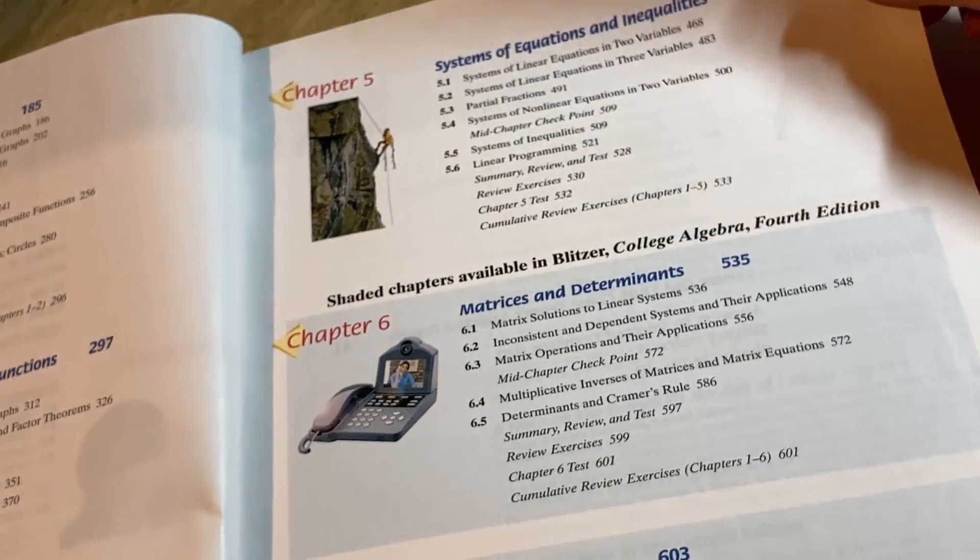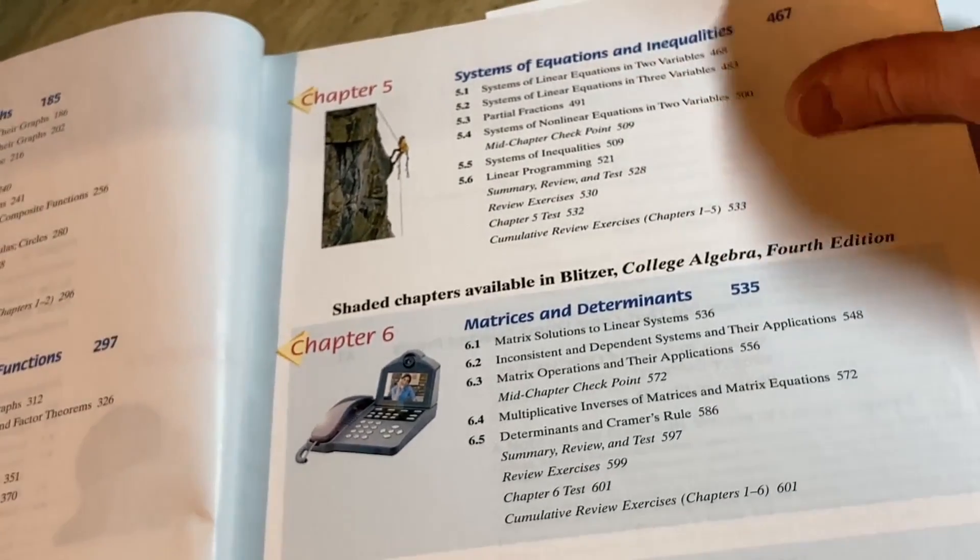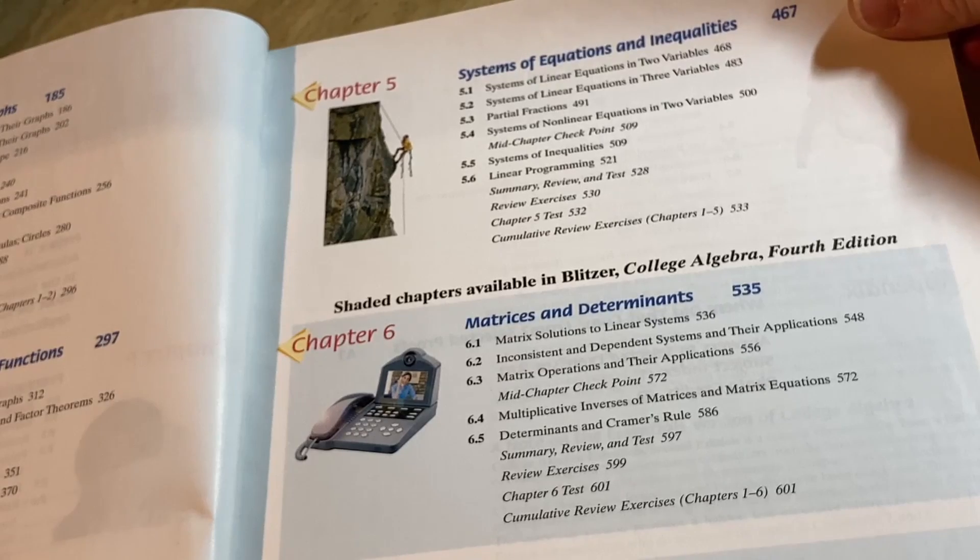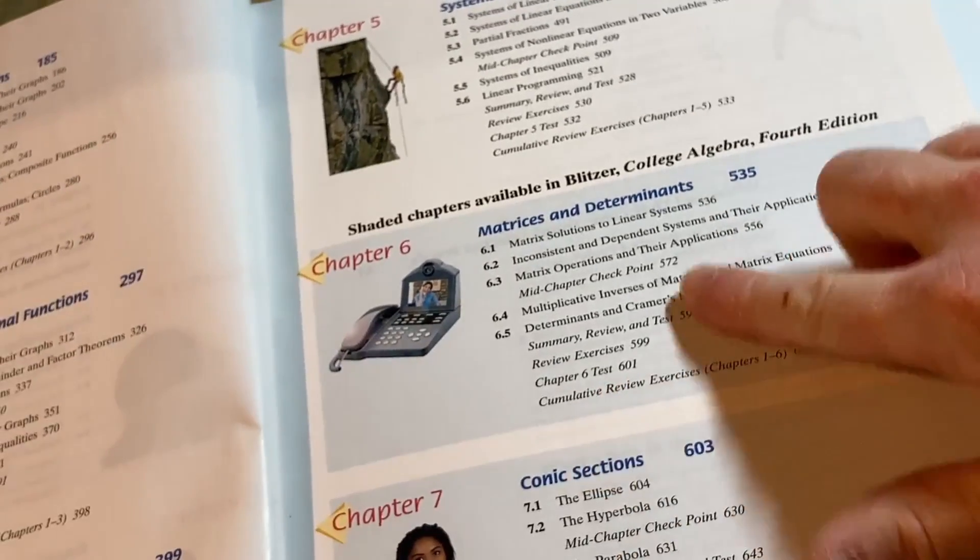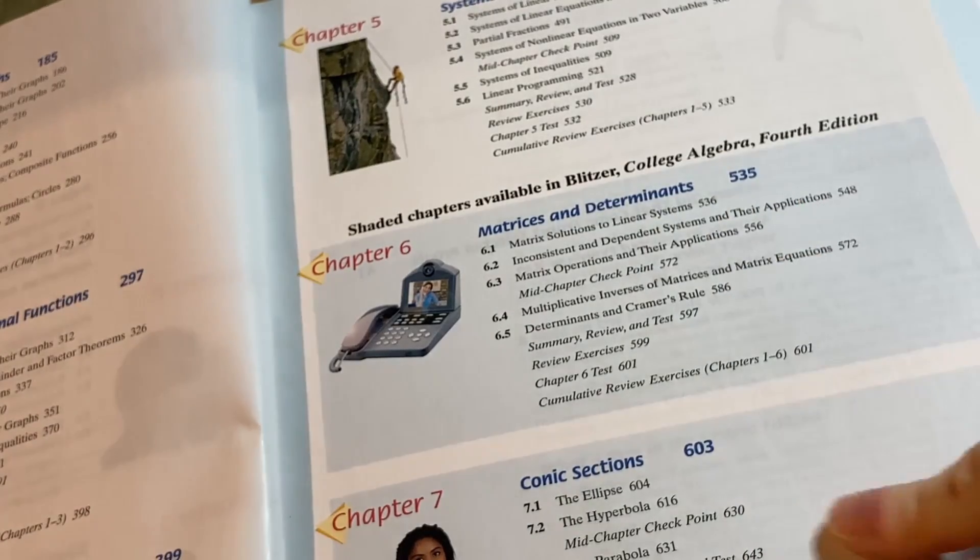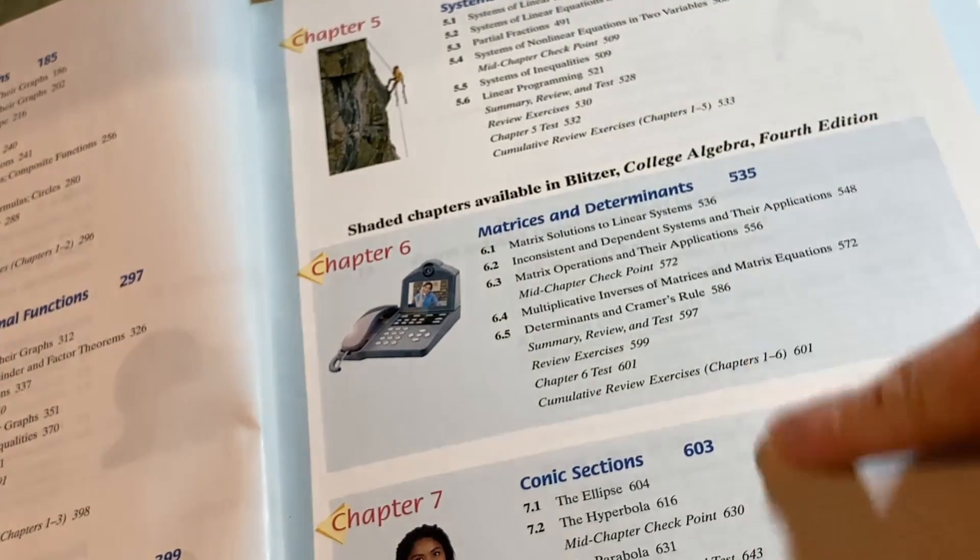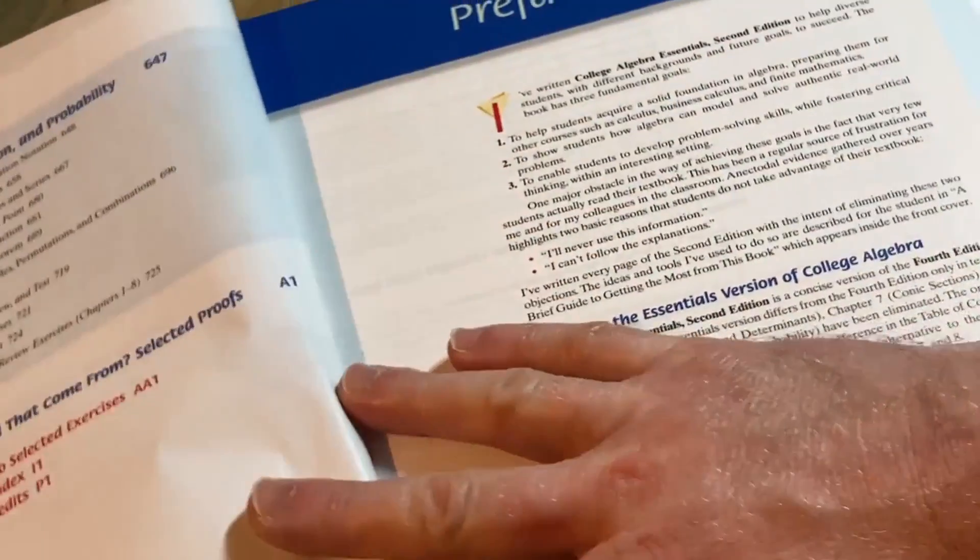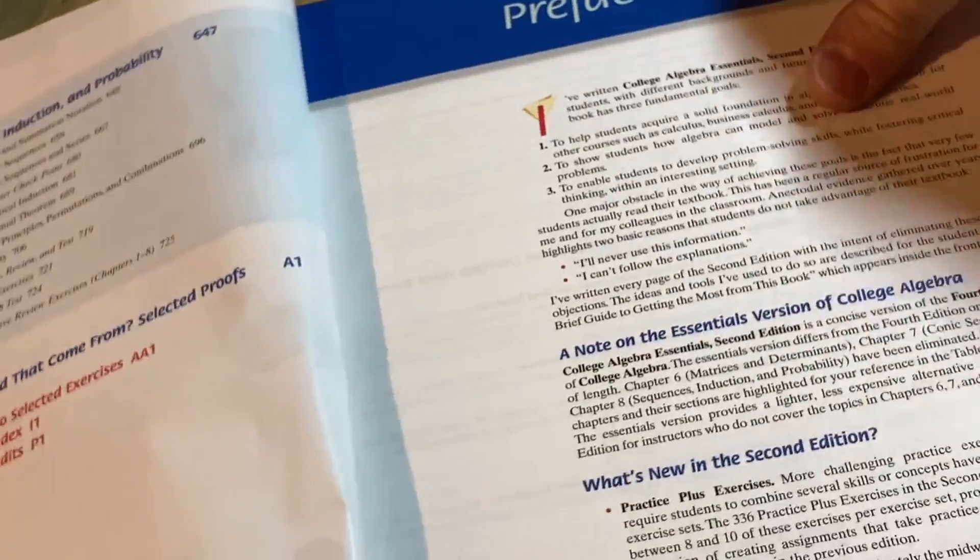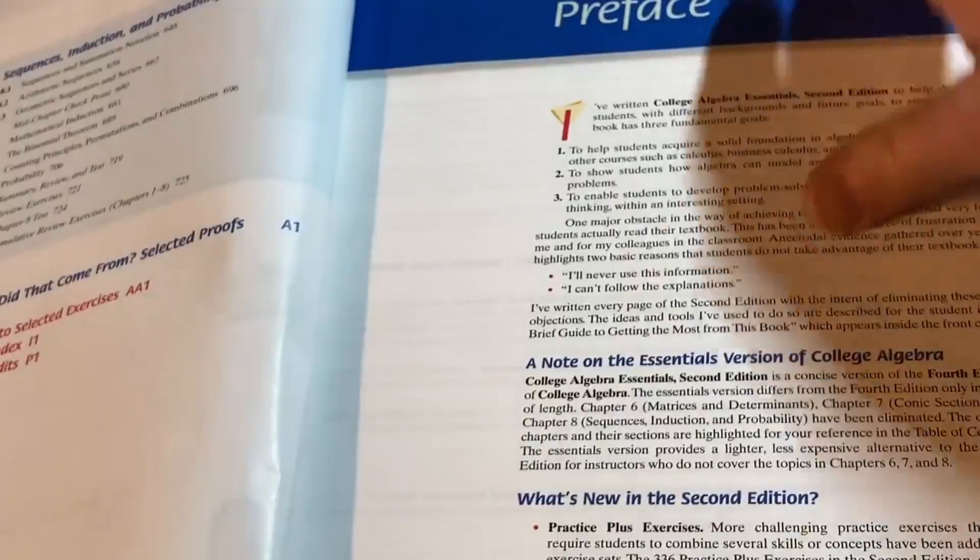Eventually I got it though. So if at first you don't succeed, try, try again. Systems of equations and inequalities. And then here it has shaded chapters available in Blitzer College Algebra 4th edition. So you don't get these chapters unless you get the regular college algebra. It doesn't seem that it goes that far.